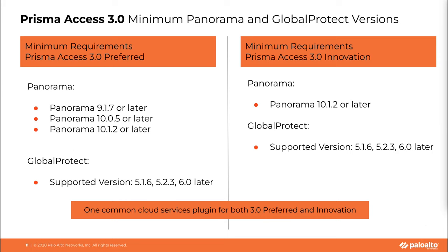Here are the minimum requirements for 3.0 Preferred and Innovation. For 3.0 Preferred, your Panorama should be running on 9.1.7 or later, 10.0.5 or later, or 10.1.2. For 3.0 Innovation, the minimum version requirement is 10.1.2 or later versions. GlobalProtect version should be 5.0.6 or 5.2.3 or any version that is not end of life.